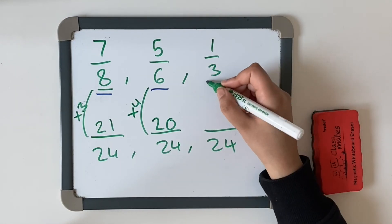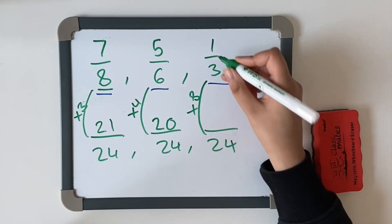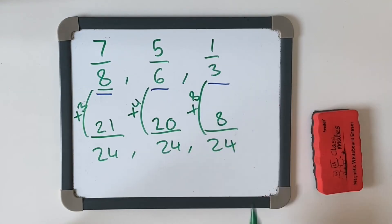And then we've also got how many threes go into 24? Three, 6, 9, 12, 15, 18, 21, 24. You're going to multiply it by 8. One times 8 equals 8. And now we're going to arrange the order from the least to the greatest according to our numerators.